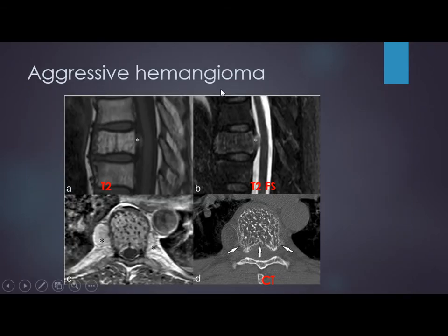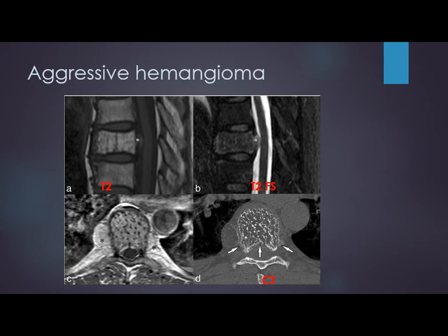Aggressive hemangioma on T2 fat saturation and on MRI shows polka dot appearance, as does CT. On CT you can clearly see the soft tissue extension of the hemangioma.